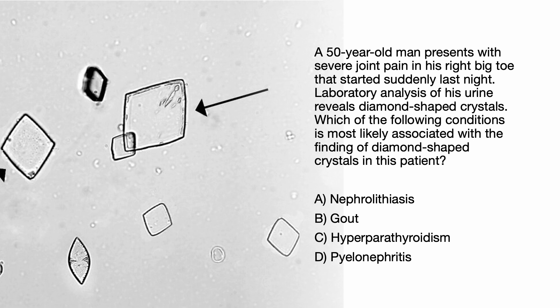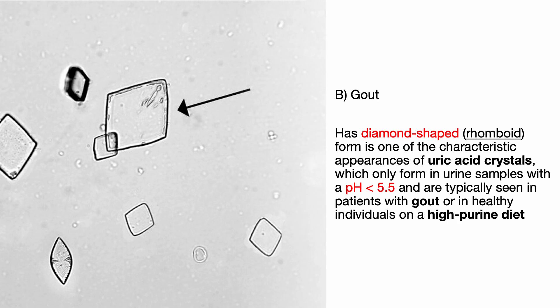A 50-year-old man presents with severe joint pain in his right big toe that started suddenly last night. Lab analysis of his urine reveals diamond-shaped crystals. Which of the following conditions is most likely associated with the finding of diamond-shaped crystals: nephrolithiasis, gout, hyperparathyroidism, or pyelonephritis? The correct answer is B, gout. Diamond-shaped rhomboid form is one of the characteristic appearances of uric acid crystals, which only form in urine samples with a pH of less than 5.5 and are typically seen in patients with gout or in healthy individuals on a high-purine diet.